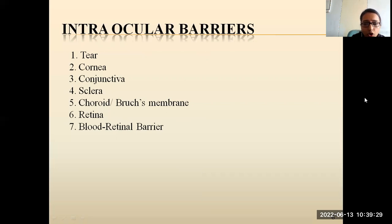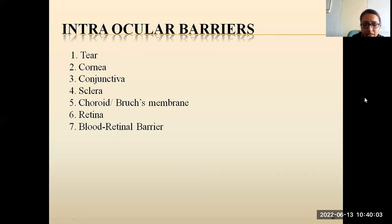The next barrier is the cornea. The cornea consists of three layers — epithelium, stroma, and endothelium — and acts as a mechanical barrier to inhibit transport of exogenous substances into the eye. The third barrier is the conjunctiva, a thin transparent membrane of the eyelids involved in the formation and maintenance of the tear film. The conjunctiva and episclera are highly supplied with capillaries and lymphatics; hence, administered drugs in the conjunctival space may be cleared through blood or lymph. The next barrier is the sclera, where increased hydrophilic or lipophilic characteristics of drugs result in lower permeability.